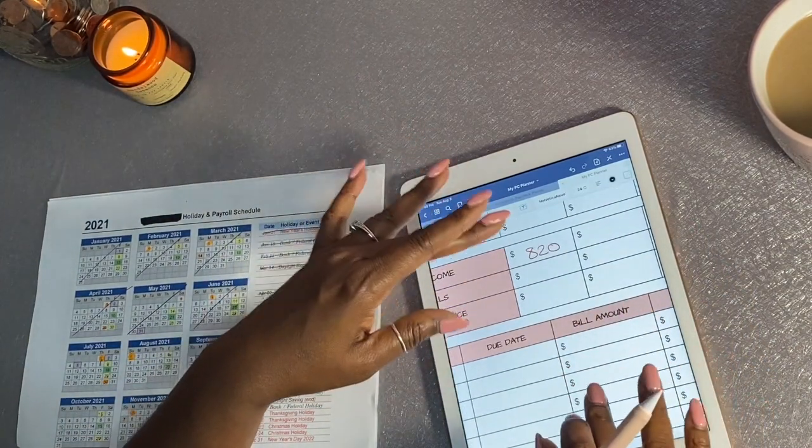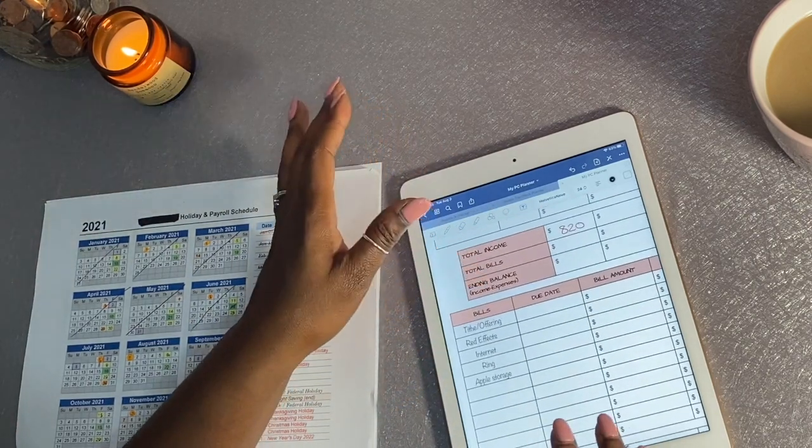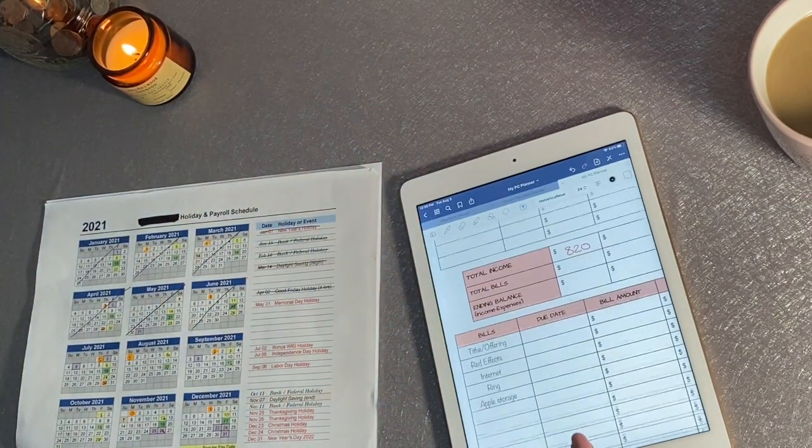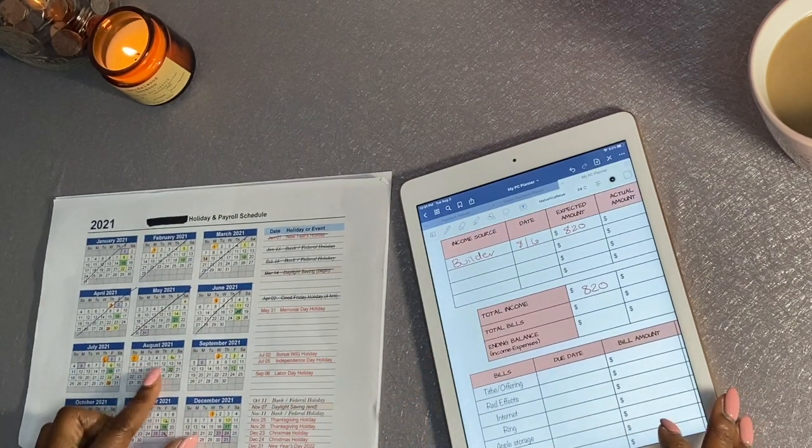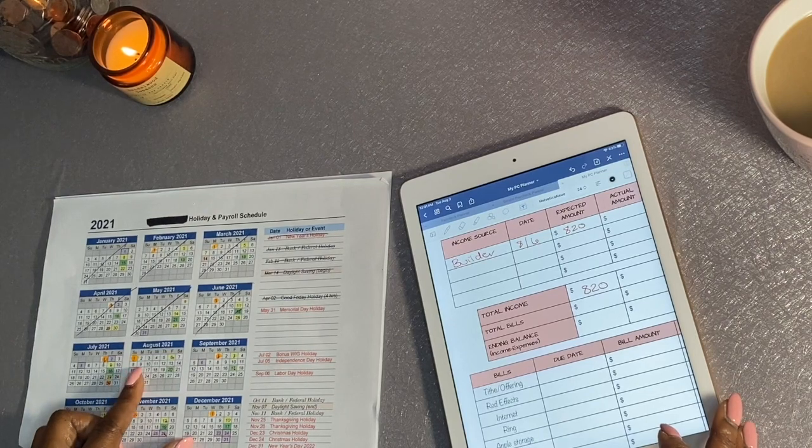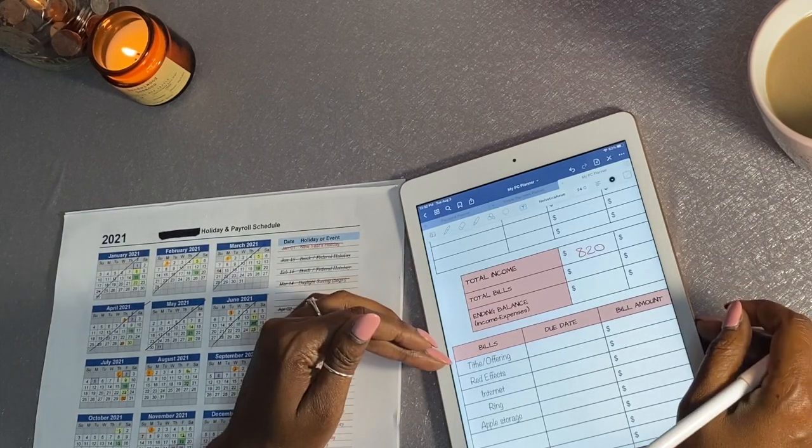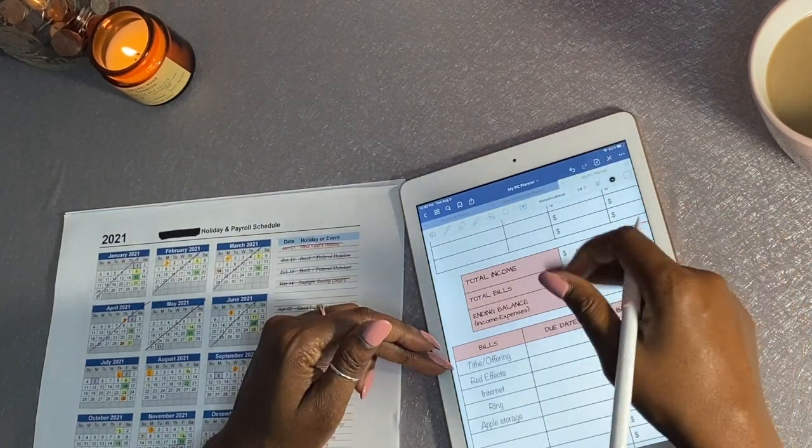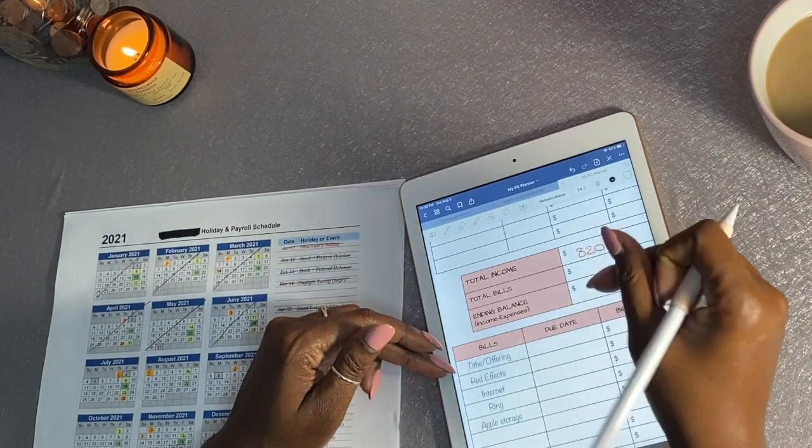So now that we have our total income set in, we're going to go down here to bills. So for this month our bills are only for the bills that are going to be due basically for the week of the 8th. So for tithe and offering I think I'm going to leave that blank because I don't even count that into my bills. I automatically take that off but I just have it on here just for reference.